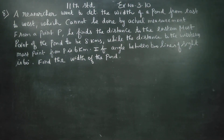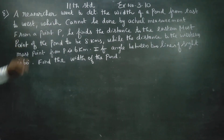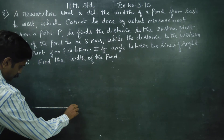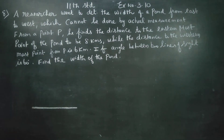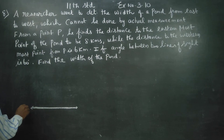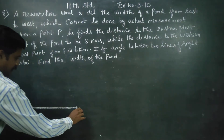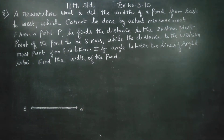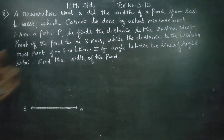Hello 11th standard students. In exercise number 3.10, a researcher wants to determine the width of a pond from east to west. One direction is east and the opposite direction is west. This is the eastern direction, this is the western direction. The researcher wants to determine the width of the pond from east to west, which cannot be done by actual measurement.